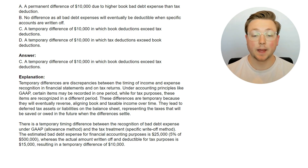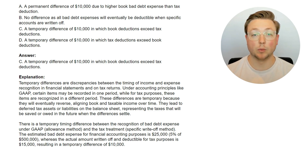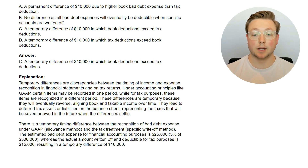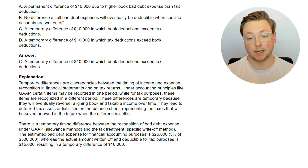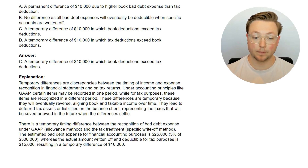Temporary differences are discrepancies between the timing of income and expense recognition in financial statements and on tax returns. Under accounting principles like GAAP, certain items may be recorded in one period, while for tax purposes these items are recognized in a different period. These differences are temporary because they will eventually reverse, aligning book and taxable income over time. They lead to deferred tax assets or liabilities on the balance sheet.